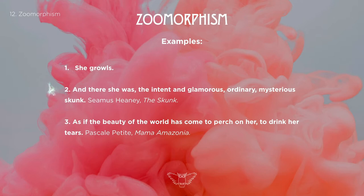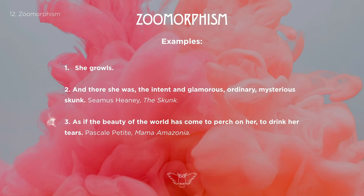Number two: 'and there she was, the intent and glamorous, ordinary mysterious skunk.' This is from Seamus Heaney's poem 'The Skunk,' where he describes his wife as a skunk. It's a weird comparison — skunks do have a kind of mystery since you only see them at night. Their fur is sleek, shiny, black and white — there's something glamorous about that. And the idea of it being intent is interesting, like a skunk out foraging, focused on doing something.